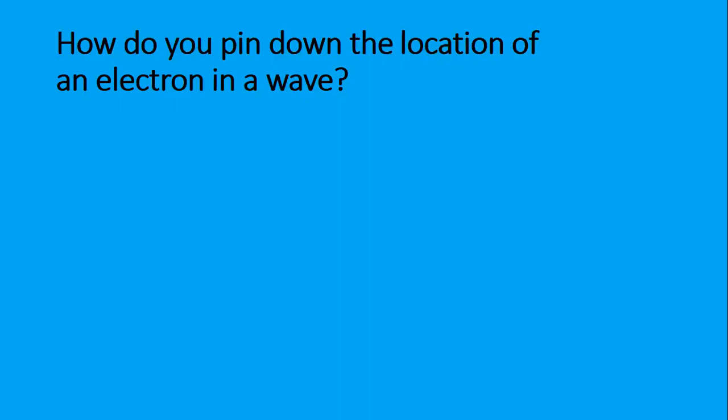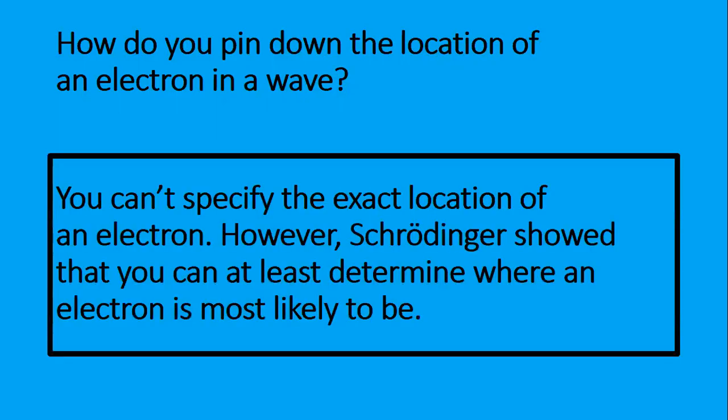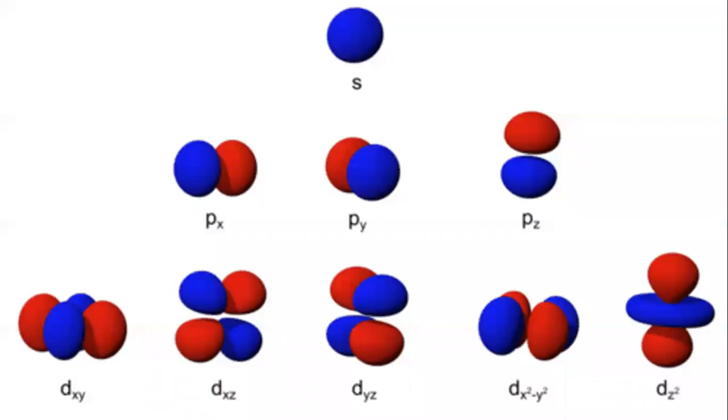Do you have an answer? Great. Let's compare it. So you can't specify the exact location of an electron. However, Schrodinger showed that you could at least determine where an electron is most likely to be. Schrodinger developed an equation that could be used to calculate the chances of an electron being in any given place around the nucleus. Based on his calculations, he identified regions around the nucleus where electrons are most likely to be. He called those regions orbitals. As you can see here, orbitals may be shaped like spheres, dumbbells, or even rings. In each case, the nucleus of the atom is at the center of the orbital.